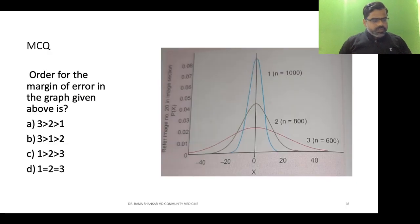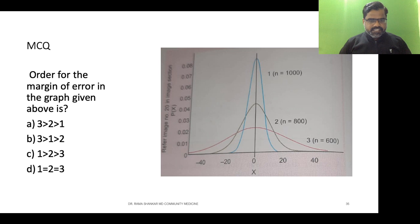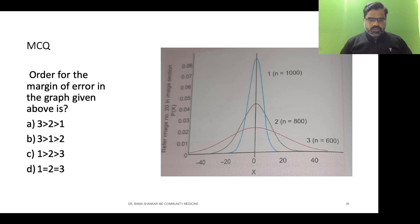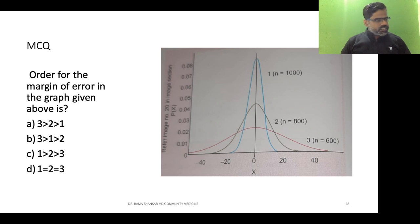The first question: order the margin of error in the graph given above. See the graph and try to answer. You have three graphs — one, two, and three — and the sample size is given. Based on margin of error and standard error, you have to answer whether the error will be more in graph three compared to two compared to one, or choose option B, C, or D. Give it a try, students.